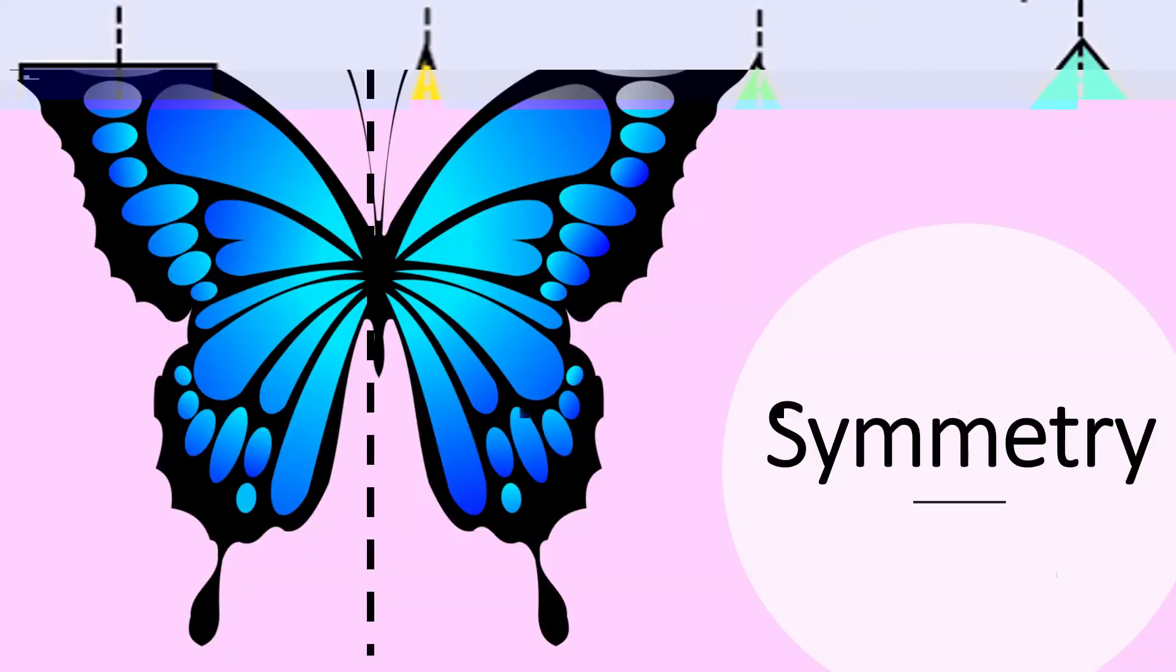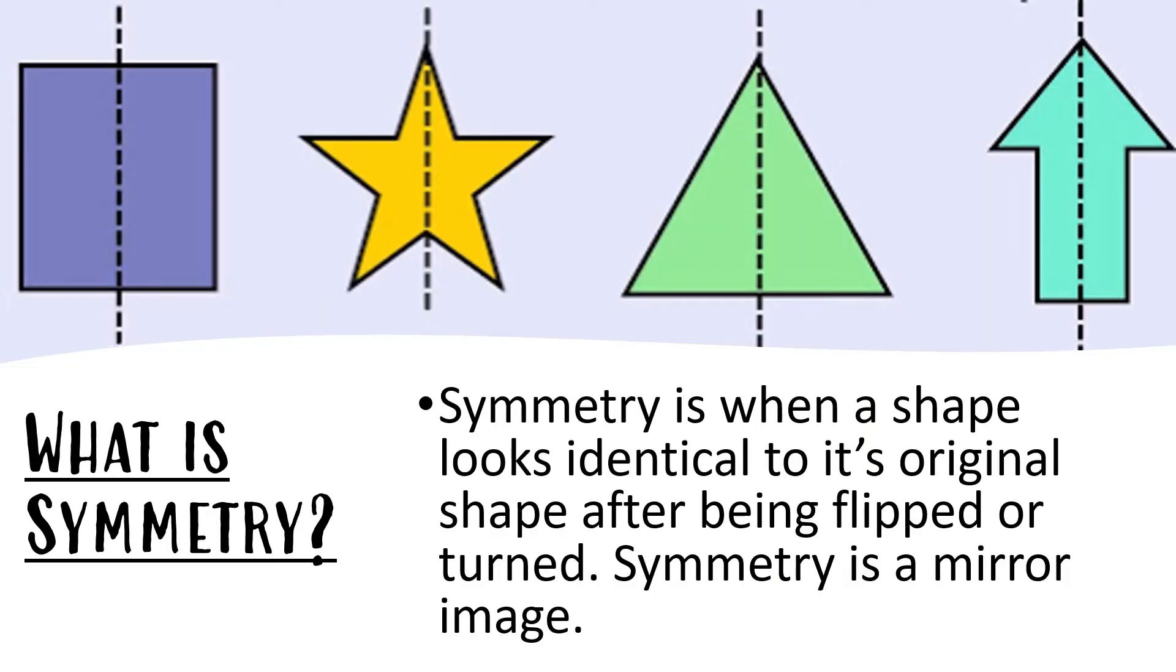Symmetry. What is symmetry? Symmetry is when a shape looks identical to its original shape after being flipped or turned. Symmetry is a mirror image.